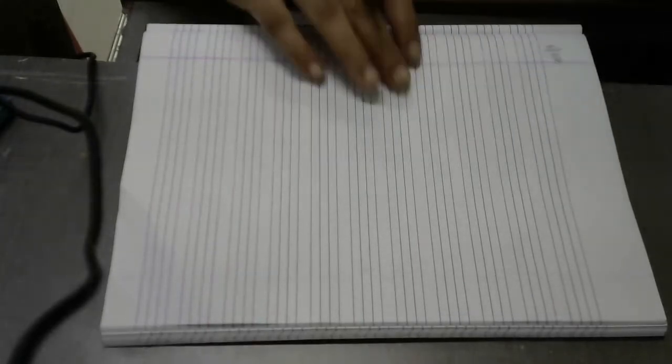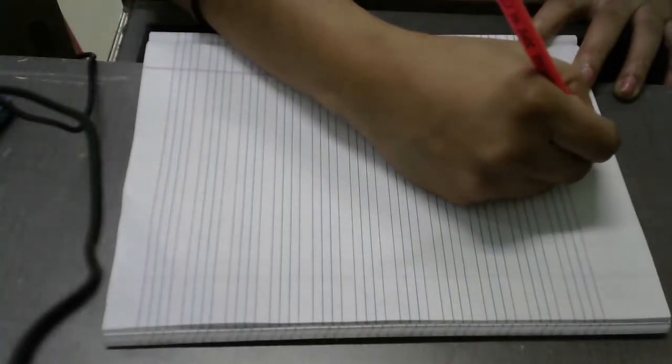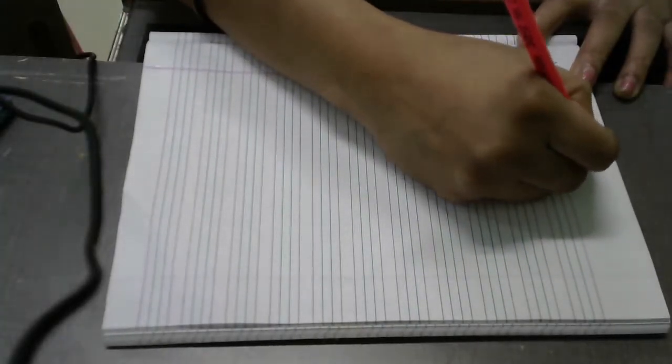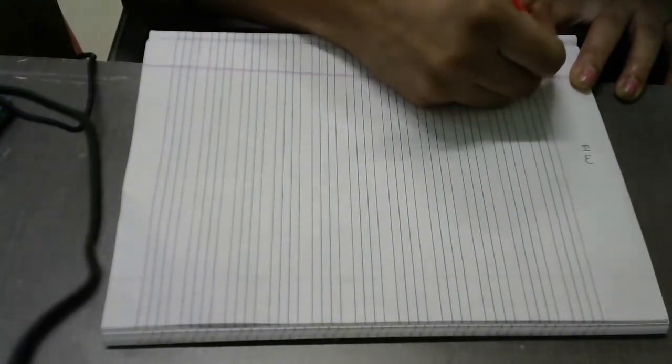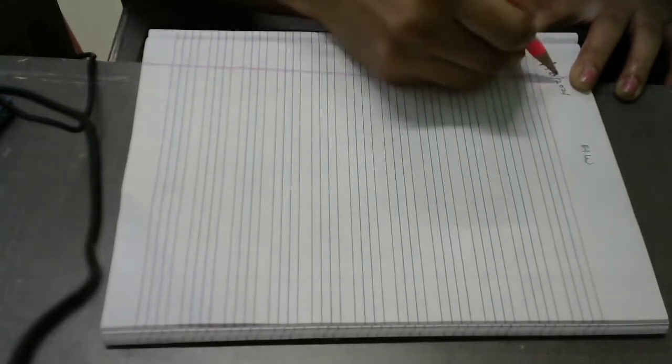Today we are going to learn how to write it in a four line notebook. So everyone open your four line notebook and write HW homework and today's date 1 October 2021, 1 slash 10 slash 2021.